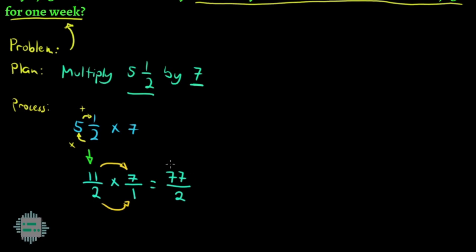Makakaisip pa ba tayo ng number na pwede natin i-divide sa ating numerator which is 77 at sa ating denominator which is 2? Kung hindi na, ito na yung ating final answer or we can also rewrite this as a mixed number.